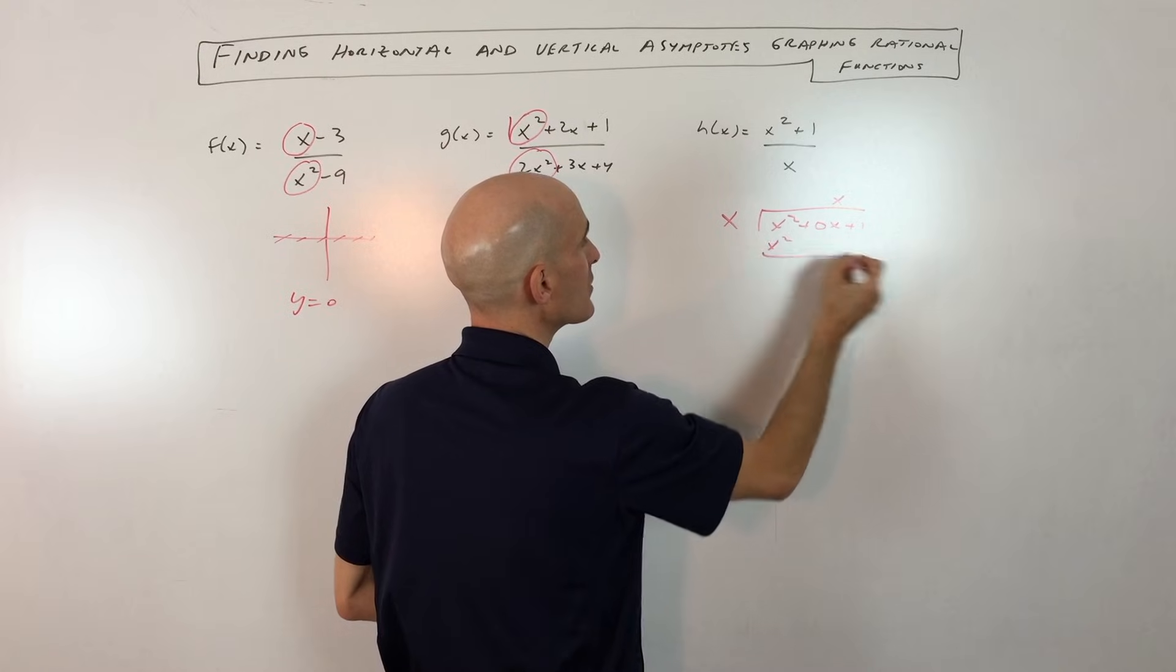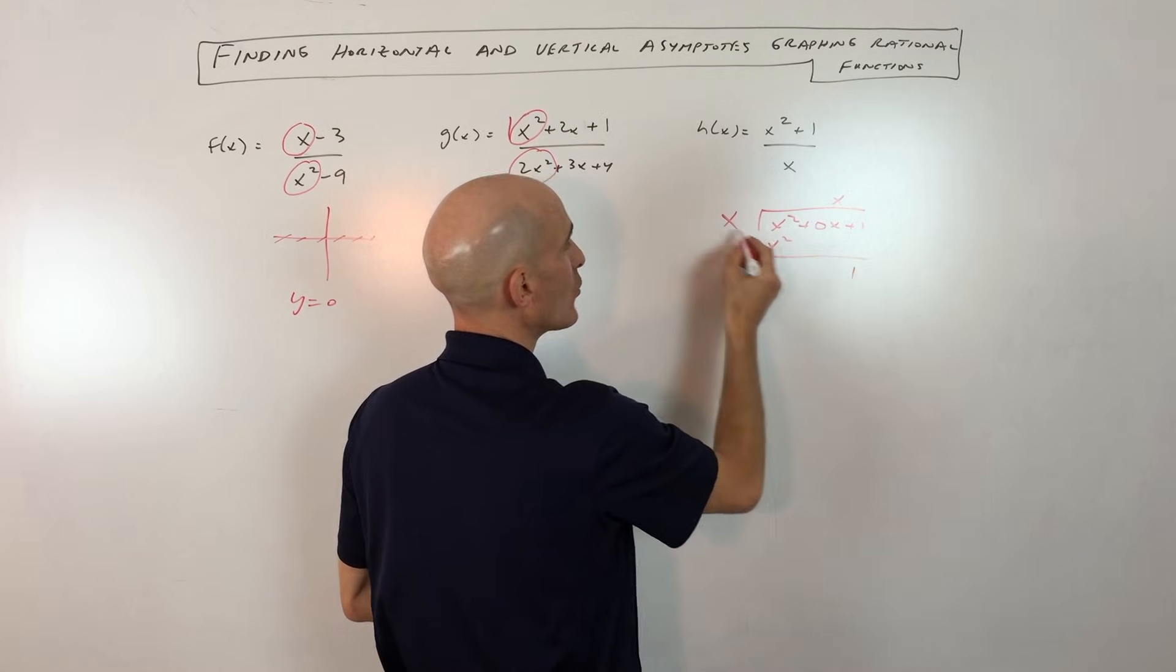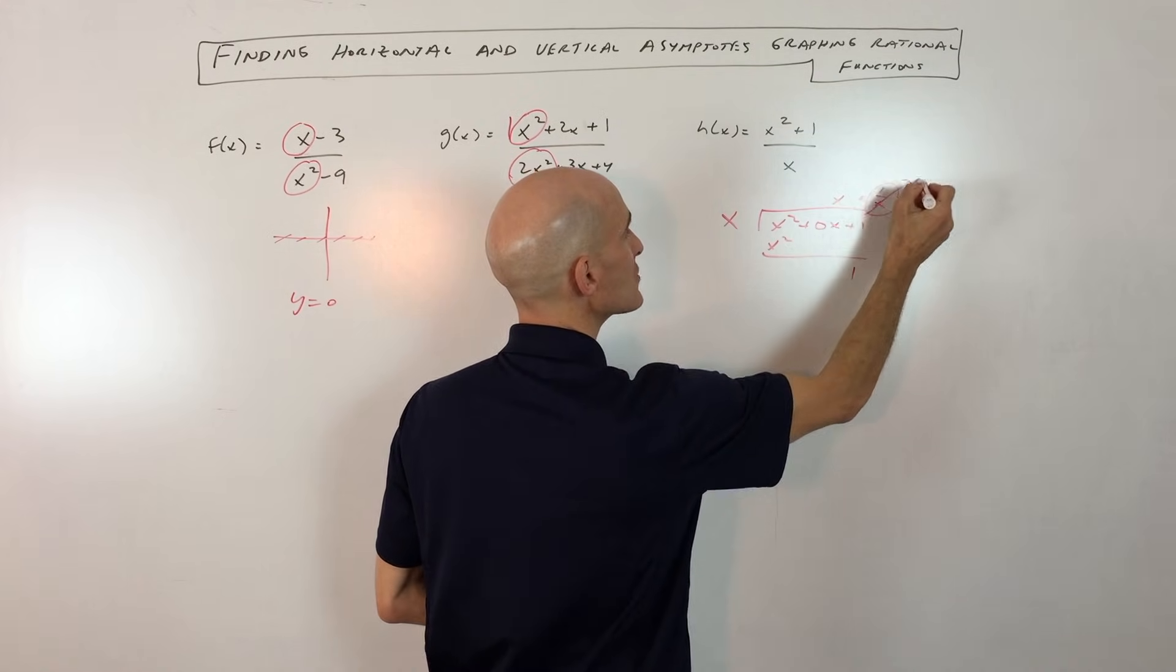x times x is x squared. If we subtract, we're getting just 1 left over. This is a lower degree than this. This would be plus 1 over x. But as x gets really large, this term actually goes to zero.